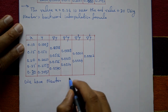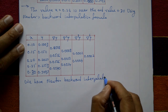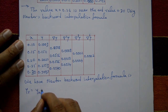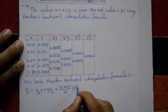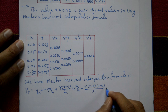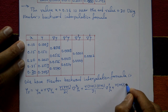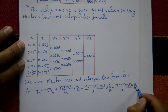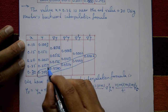Newton's backward interpolation formula is: y(r) = y_n + r·∇y_n + r(r+1)/2! · ∇²y_n + r(r+1)(r+2)/3! · ∇³y_n + r(r+1)(r+2)(r+3)/4! · ∇⁴y_n + ... We use the last values of each column as the leading backward differences.